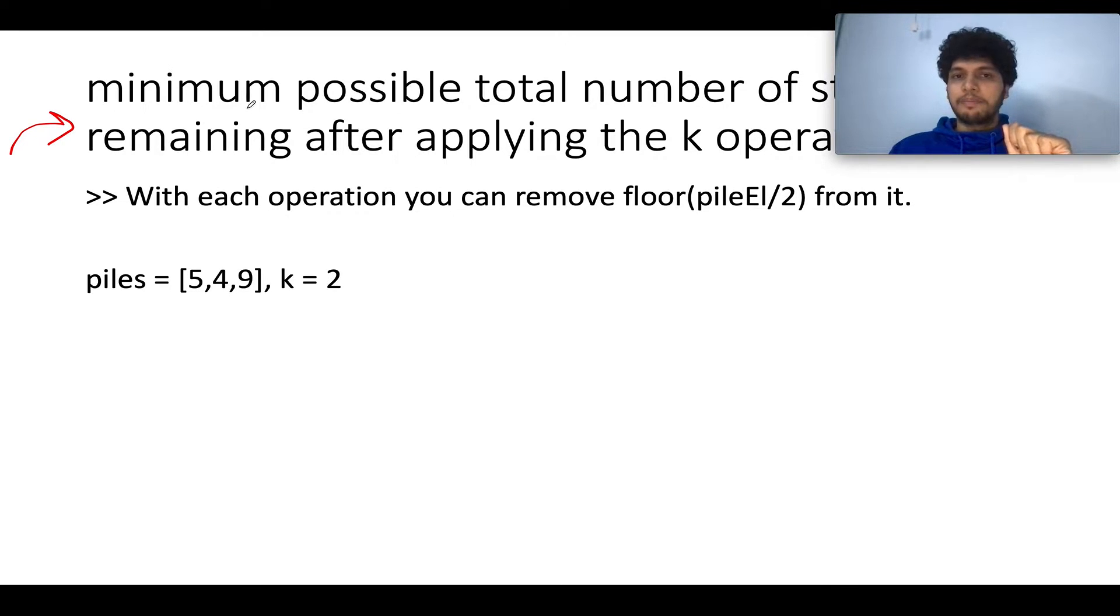The question says return minimum possible total number of stones remaining after applying k operations and with each operation what you can do, you can remove the floor of any pile entry by two from that pile entry and let's think over it. The minimum word is really important. So if you want to minimize the total what you will be doing, you will be picking up the pile that has the maximum stones on it so that after removing piles by two from it whatever remains will be least in nature.